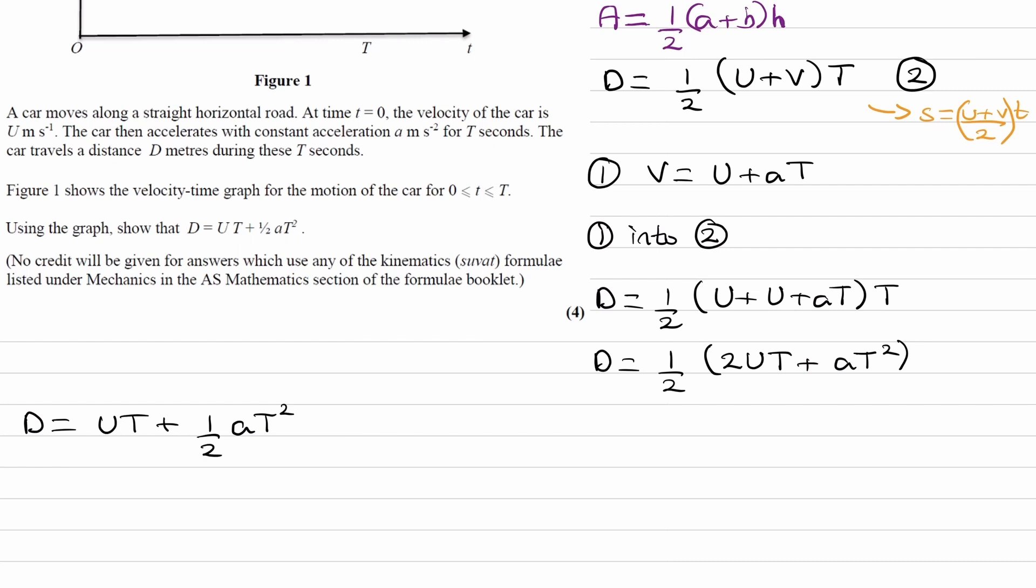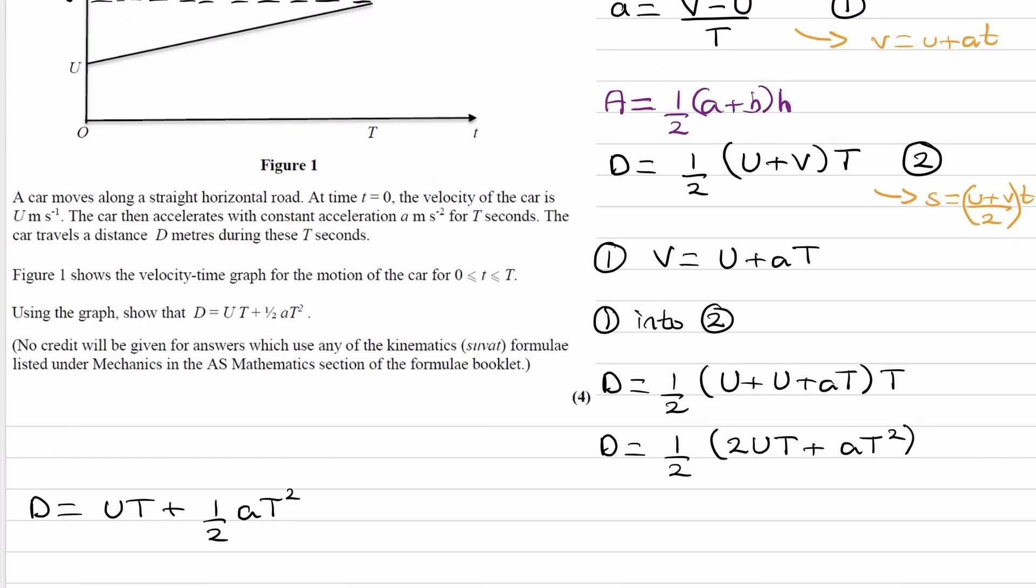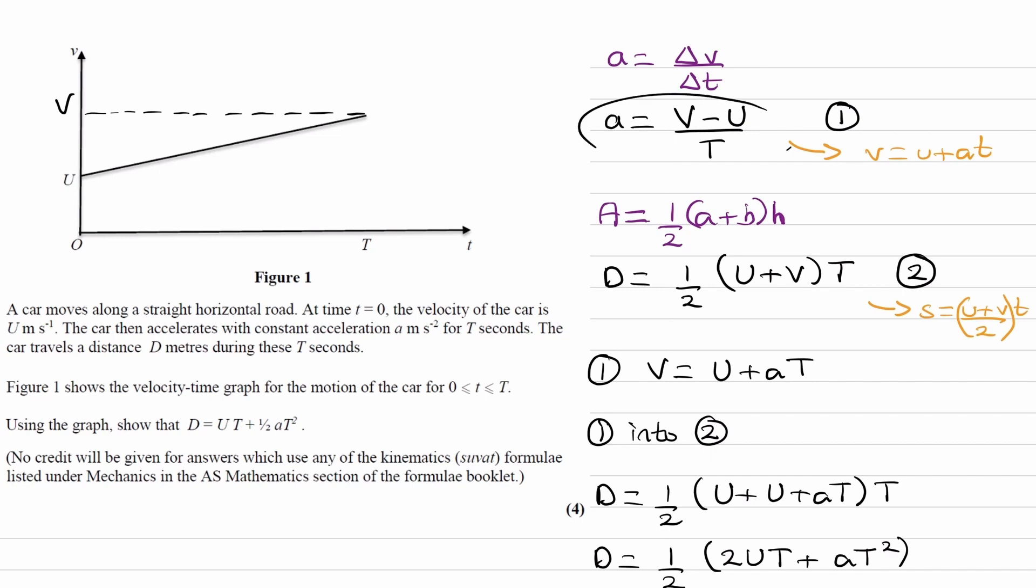Now there are two other equations, there's also S is equal to VT minus half AT squared. To get that equation, we would again use this, and we would rearrange for U, so rearrange this equation, which is the same as this equation, rearrange that equation for U, and then replace this U with that, and then we'll get S is equal to VT minus half AT squared.